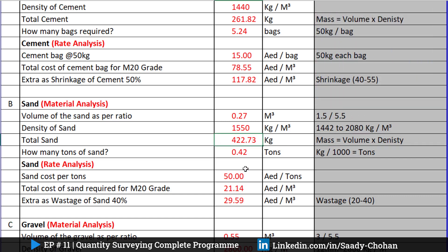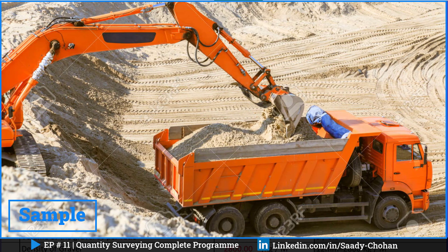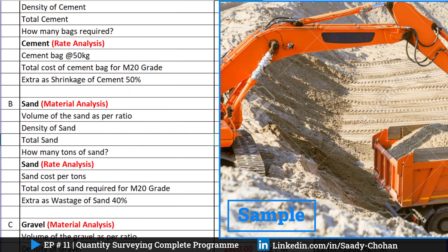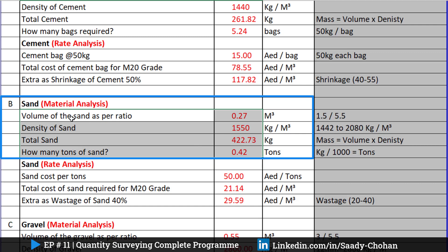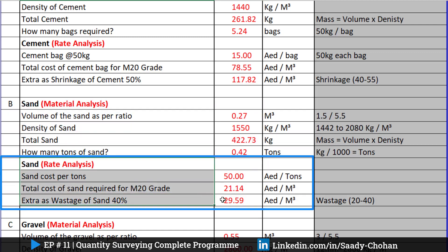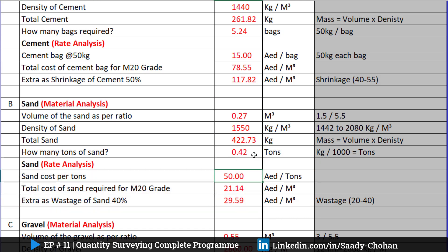I have a total of 422 kg of sand. We buy sand in tons, so I divide by 1,000 and get 0.42 tons. That completes the material analysis for sand. For the rate analysis, I need to know the cost per ton. Here it costs around 50 AED per ton. Multiplying gives around 21 AED per cubic meter.